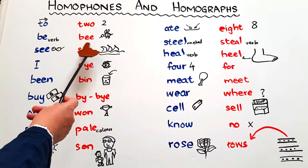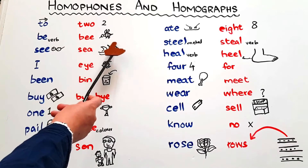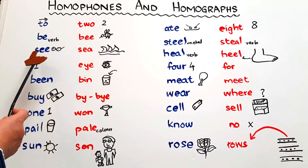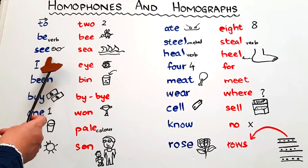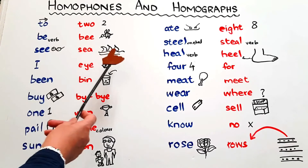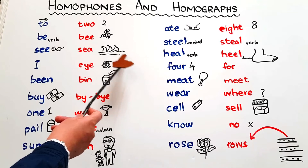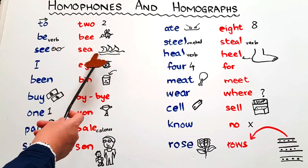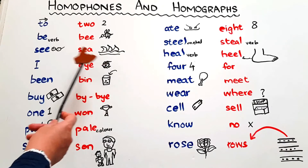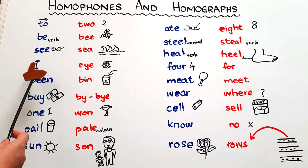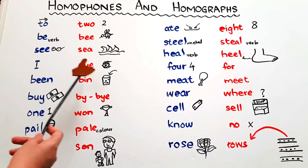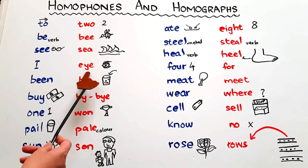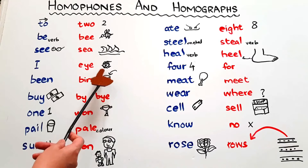'Be' — the verb, as in 'I want to be a doctor' — and 'bee' with B-double-E, the honey bee. 'See' — to look somewhere, S-double-E-C — and 'sea', a body of water, S-E-A. 'I' — the personal pronoun referring to yourself — and 'eye', the body part.